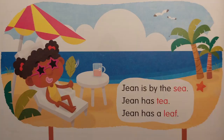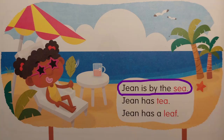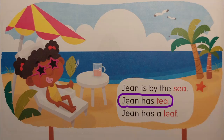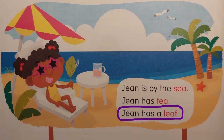There you have a girl — she's by the sea. Now let's read the sentences. I go first, then you repeat. Gene is by the sea. Gene is by the sea. Gene has tea. Gene has tea. Gene has a leaf. Gene has a leaf.